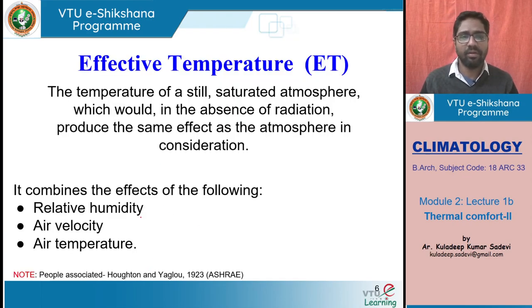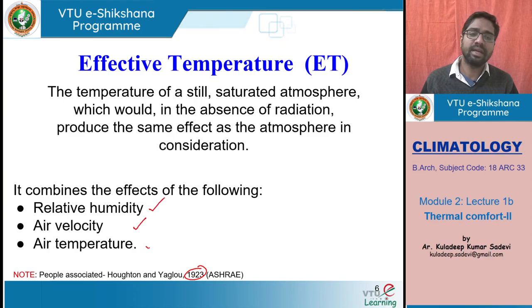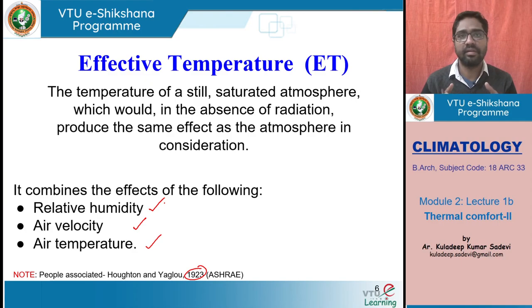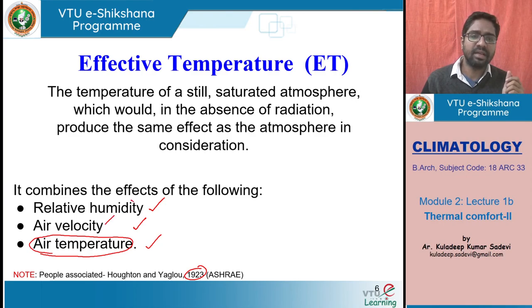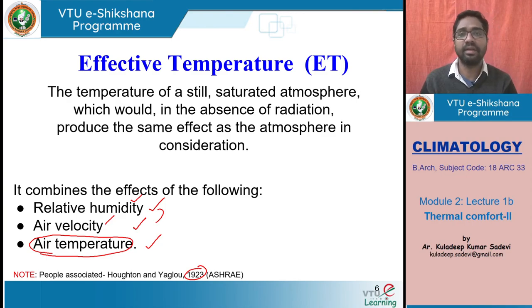Houghton and Yawlau derived this in 1923 while working at ASHRAE. They brought in relative humidity, air velocity, and air temperature as three parameters which define the feeling of a human. What effective temperature a person feels is not just based on dry bulb temperature — we need to also understand the air velocity and relative humidity. Without knowing these two, we cannot determine what the feeling of that person is at that particular place.